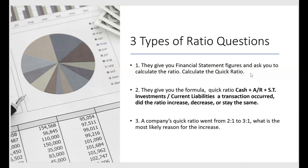For the second type of ratio question, they give you the formula. They'll say: here's the quick ratio formula — cash plus receivables plus short-term investments divided by current liabilities. Then the exam tells you that a transaction occurred and asks whether that transaction increased, decreased, or caused the ratio to stay the same. Since they provide the formula, you don't need to memorize it; you just need to know the impact of the transaction.